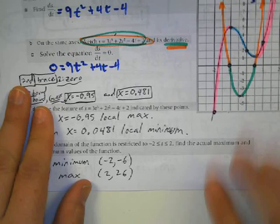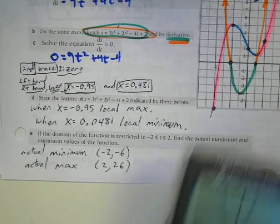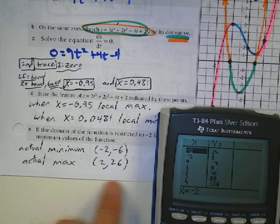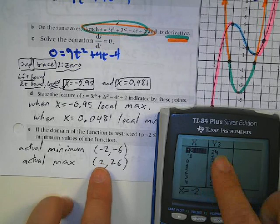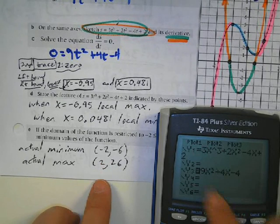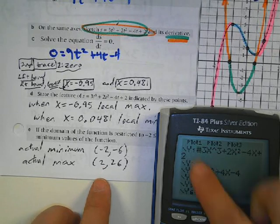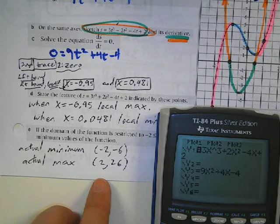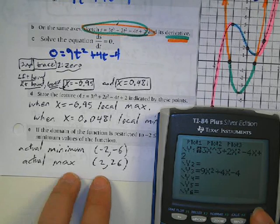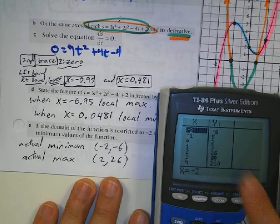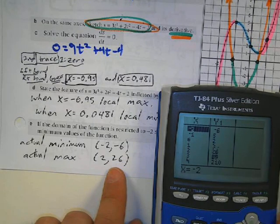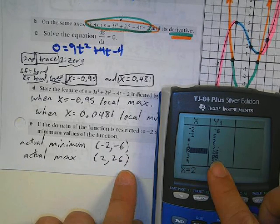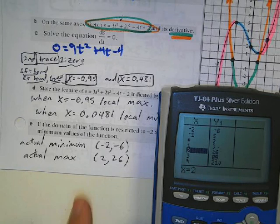One quick way is to hit second graph to get a table. Make sure you're looking at the table for the original function, not the derivative. At negative 2, the y-value is negative 6, and going down to positive 2, the y-value is 26.